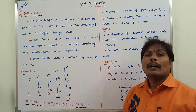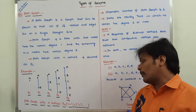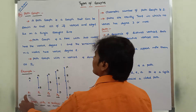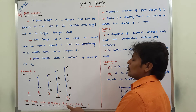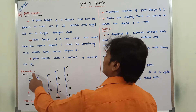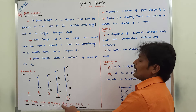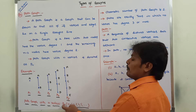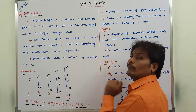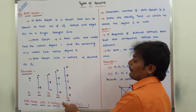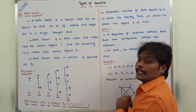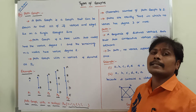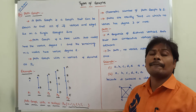A path graph with N vertices is denoted by P suffix N. Where N equals 1, that is a path graph with one vertex. If N equals 2, that is P2, a path graph with two vertices. If N equals 3, that is P3. If N equals 4, that is P4. If N equals 5, that is P5. In general, a path graph with N vertices is denoted by P suffix N.